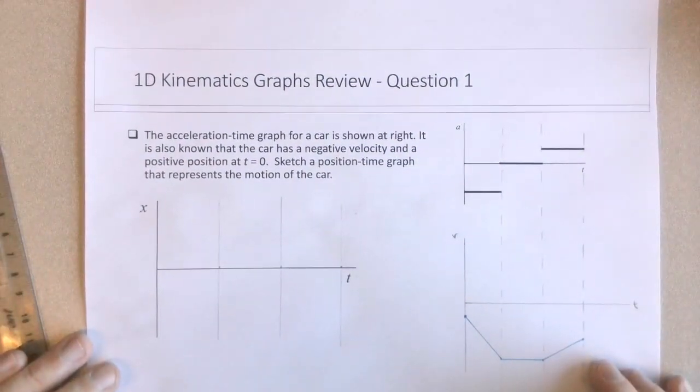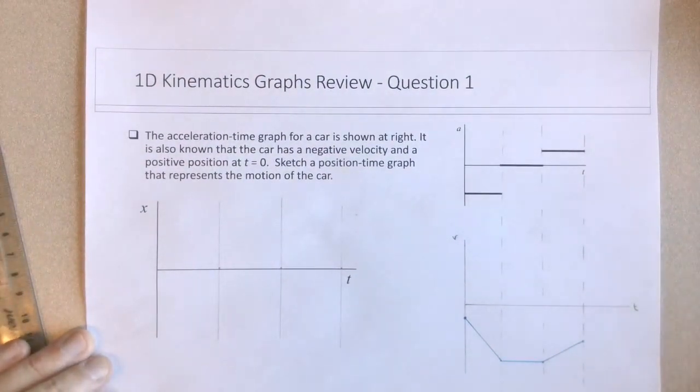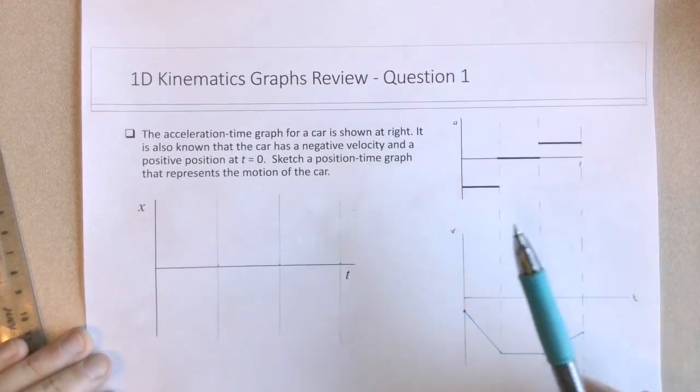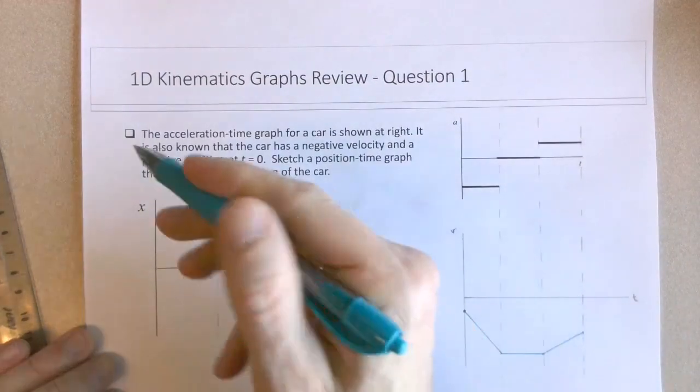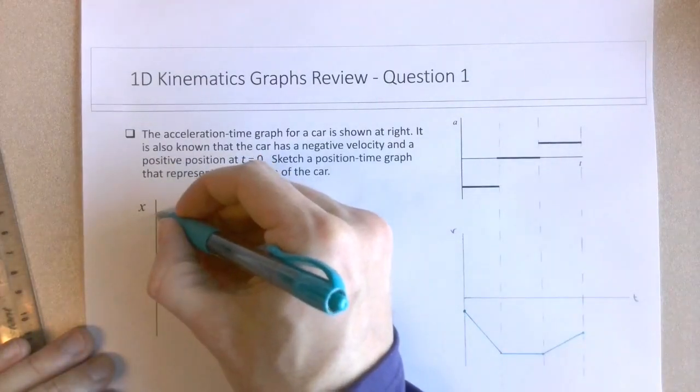Okay, so what we have in this particular case is that we have initially a positive position. Again, it doesn't state explicitly how positive. But just to use the room and the graph, I'll start with a large positive position.